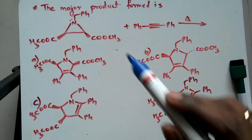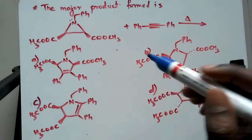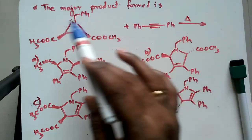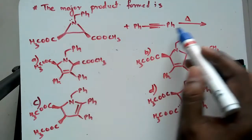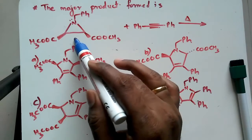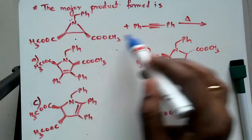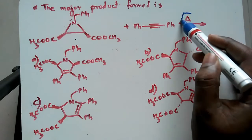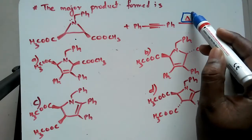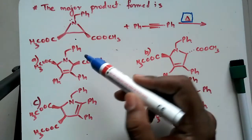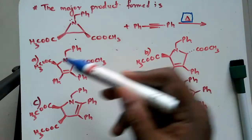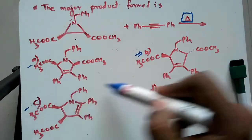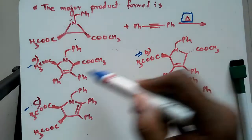Hello friends, this question is from the CSIR NET exam. Here the major product formed — this is the reaction, this is the first reactant, the second reactant, and the condition given is thermal. We will have to check which one will be the product: A, B, C, or D.